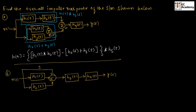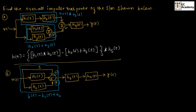Now let us consider another system where we need to find the overall impulse response. If we consider this part of the system, it is in parallel form. So, in place of 1, we can write delta of t. We are having a negative sign, so we write minus, then H1 of t. Then, we are having a plus sign, so we write plus H2 of t.